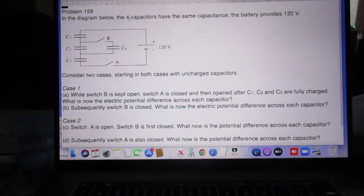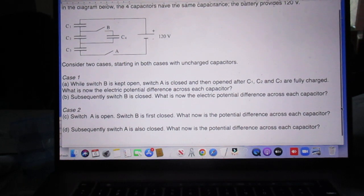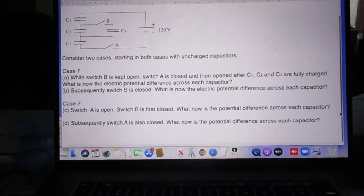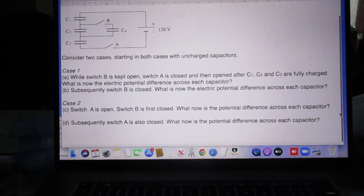Problem 159. In the diagram below, you see the diagram here, the four capacitors have the same capacitance. The battery provides 120 volts. This is the battery, positive side, negative side. Consider now two cases.